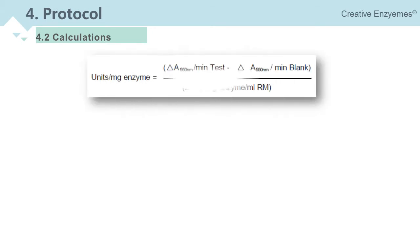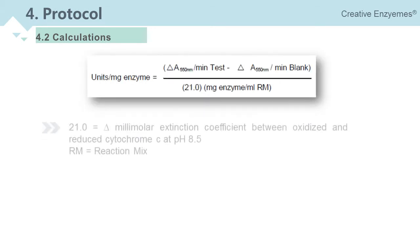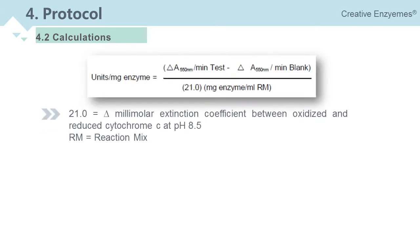Calculation formula is shown below. 21.0 represents differential values of millimolar extinction coefficient between oxidized and reduced cytochrome C at pH 8.5. RM represents reaction mix.